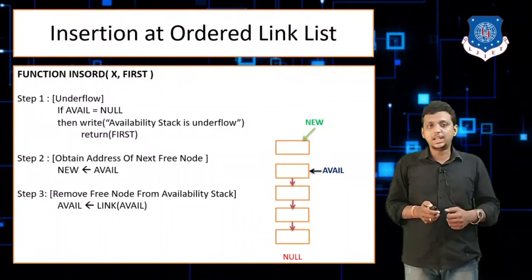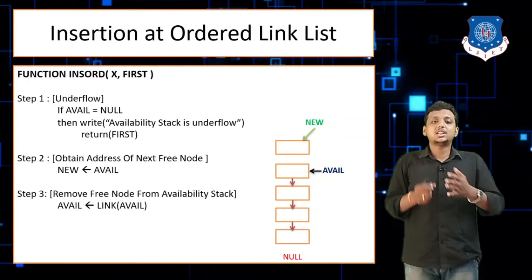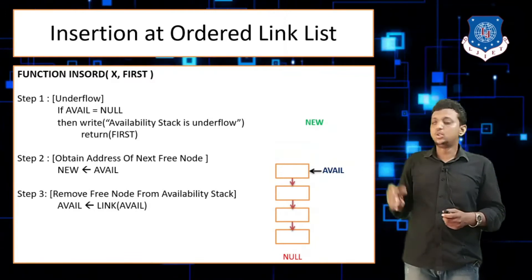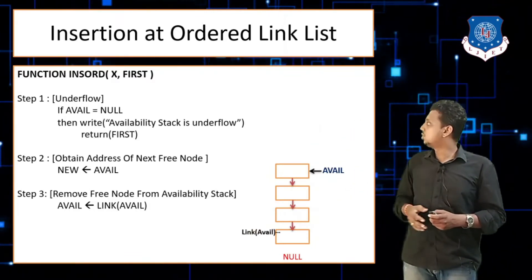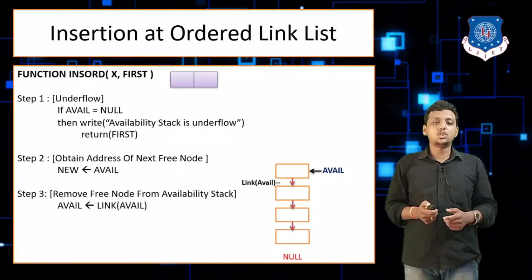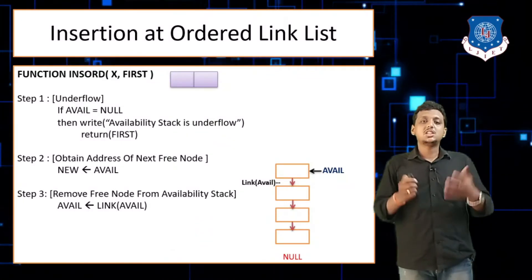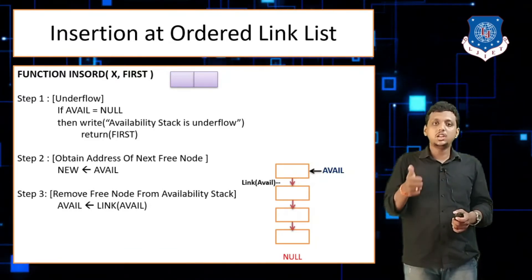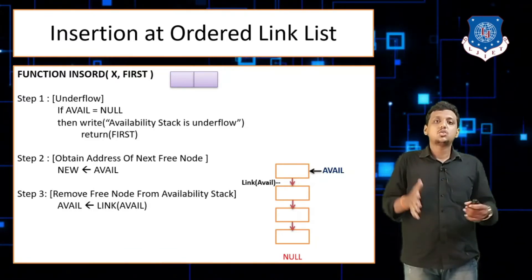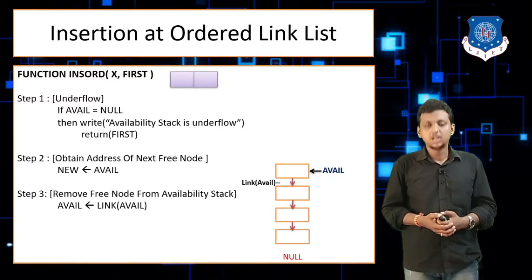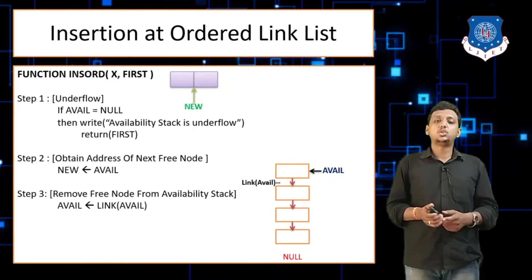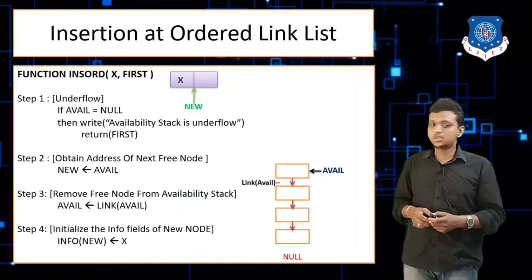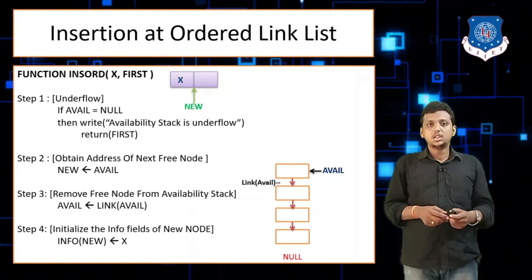After avail is moved, the new node is free to take from the availability stack. Each node contains two fields: info and link. We initialize the new node fields: info of new equals x, so the info field gets the value x which we want to insert.